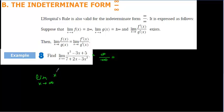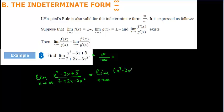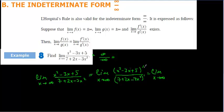So: limit as x tends to infinity of x² minus 3x plus 5 over 7 plus 2x minus 3x². I'm rewriting the question to show all the steps. We apply L'Hôpital's rule — taking the derivative of the numerator and denominator. The derivative of x² is 2x, the derivative of minus 3x is minus 3, and the plus 5 gives 0. For the denominator: derivative of 7 is 0, derivative of 2x is 2, and derivative of minus 3x² is minus 6x.